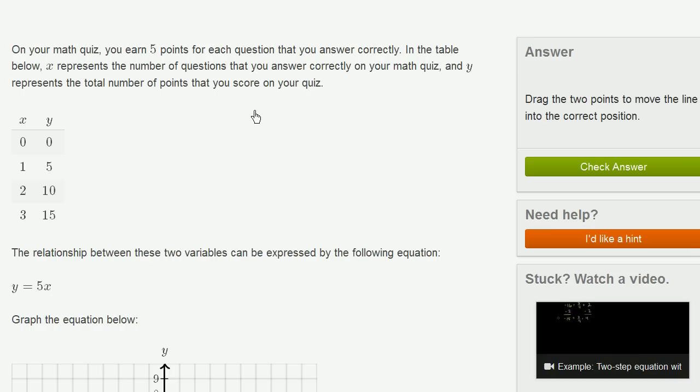On your math quiz, you earn five points for each question that you answer correctly. In the table below, x represents the number of questions that you answer correctly, and y represents the total number of points that you score on your quiz.